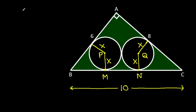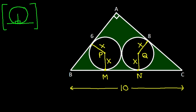Now, in any circle, the radius and tangent are perpendicular to each other. And if we join PQ, then PQ will be X plus X, that is 2X. So MN will also be 2X.